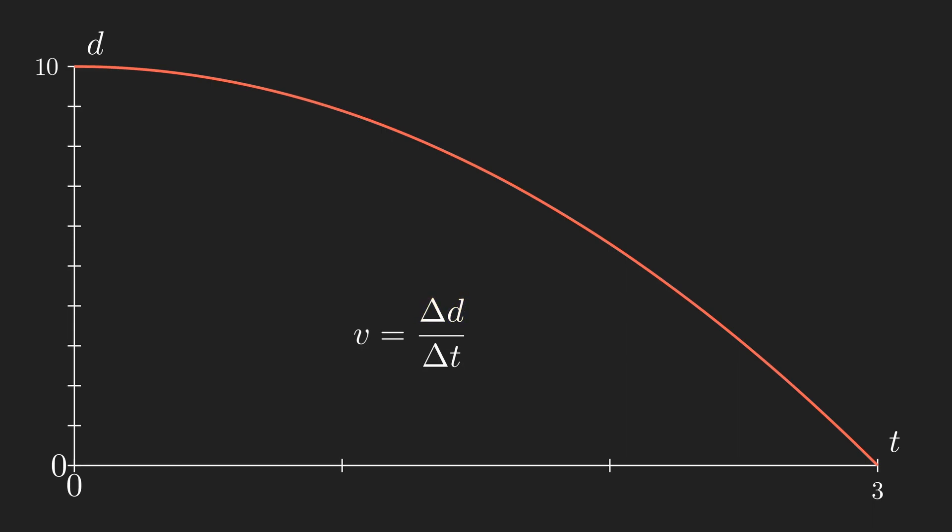So the final distance of the ball from earth is 0, subtract the initial distance which is 10. Now for the time, the final time is 3, subtract the initial time which is 0.